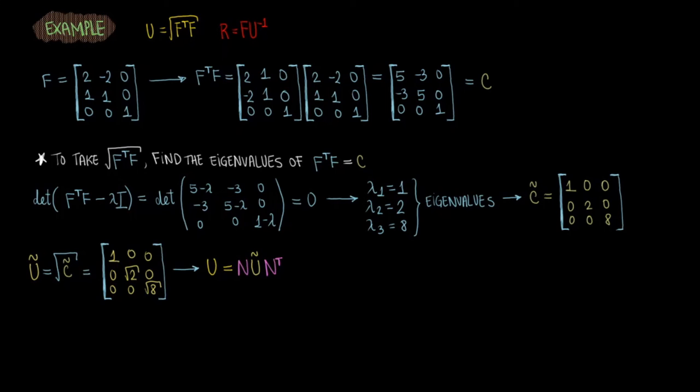We find U tilde by taking the square root of C tilde, and since C tilde is a diagonal matrix, we can simply take the square root of the individual components.